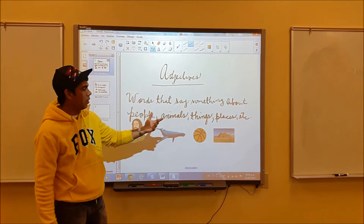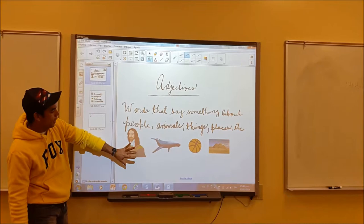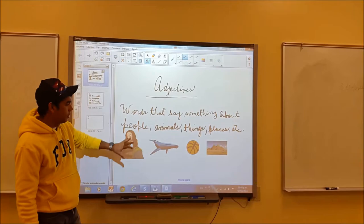If you look at the images, you will see that they're here. You'll find a man, a whale, a ball, and a place to represent all these nouns that we have over there.